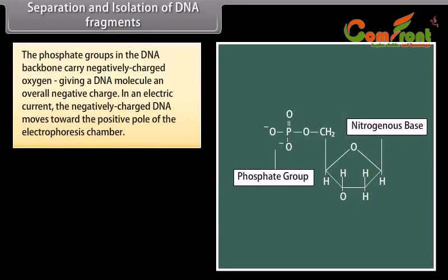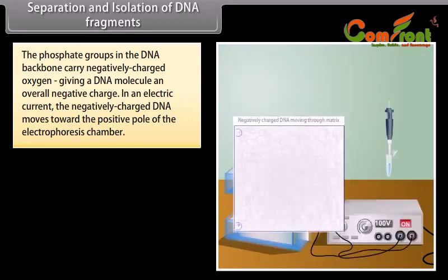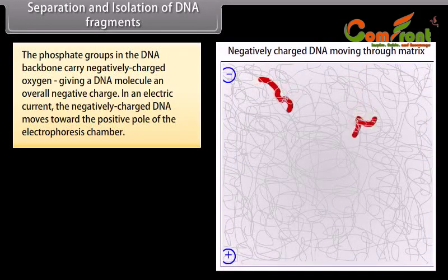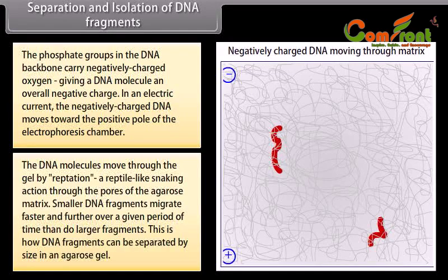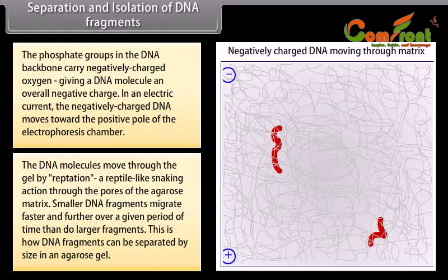The phosphate groups in the DNA backbone carry negatively charged oxygen, giving a DNA molecule an overall negative charge. In an electric current, the negatively charged DNA moves towards the positive pole of the electrophoresis chamber. The DNA molecules move through the gel by reptation — a reptile-like snaking action through the pores of the agarose matrix. Smaller DNA fragments migrate faster and further over a given period of time than larger fragments. This is how DNA fragments can be separated by size in an agarose gel.